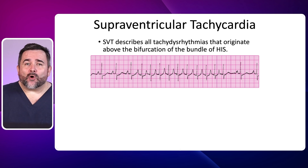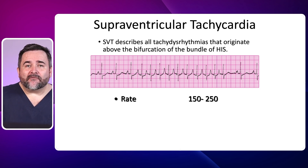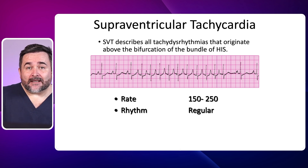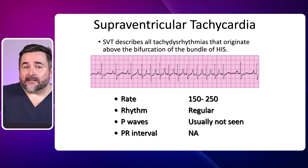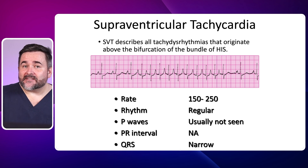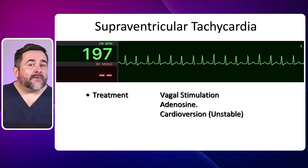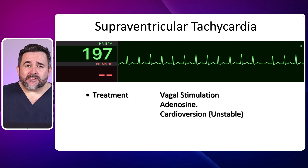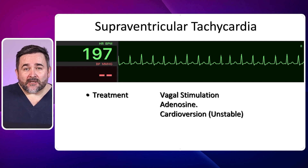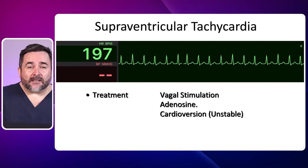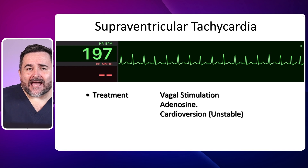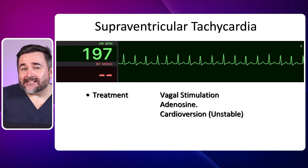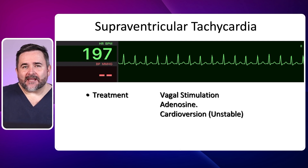SVT describes all tachyarrhythmias that originate above the bifurcation of the bundle of His. The rate is 150 to 250, the rhythm is regular, P waves are usually not seen, the PR interval is not measurable, and the QRS complex is narrow. Here we see an SVT at a rate of about 197. First line treatments for stable SVT include vagal stimulation, and if that does not work, we can use adenosine. Adenosine is given by a rapid IV push. If you have an unstable SVT, synchronized cardioversion can be performed.